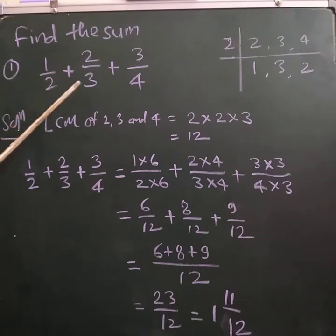Here denominator is 2, here 3 and 4. So at first we have to find out the LCM of 2, 3 and 4.